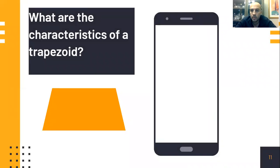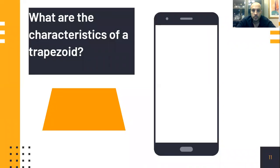This is a trapezoid. What are the characteristics of a trapezoid? Let me give you about 10 seconds to sit and think about that. You can also refer to the note-taking sheet from yesterday if you like. A trapezoid has at least one pair of parallel sides.